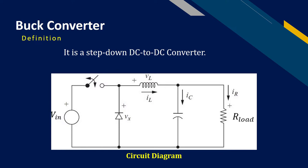First of all, consider the definition of buck converter. It is a step-down DC to DC converter. This is the circuit diagram of the buck converter that consists of one inductor and one capacitor.